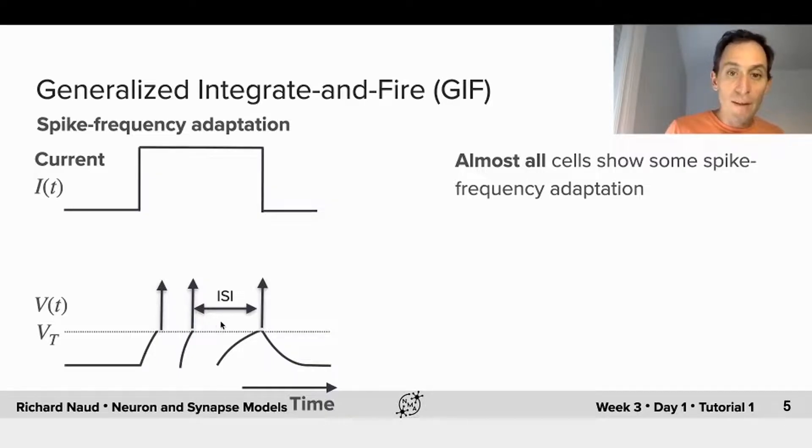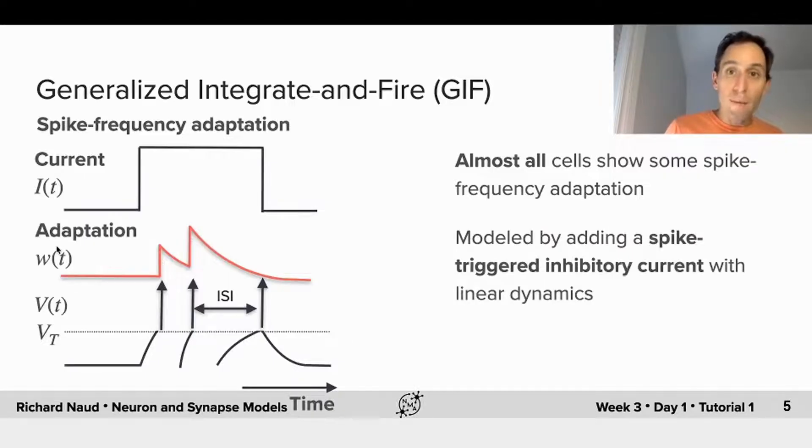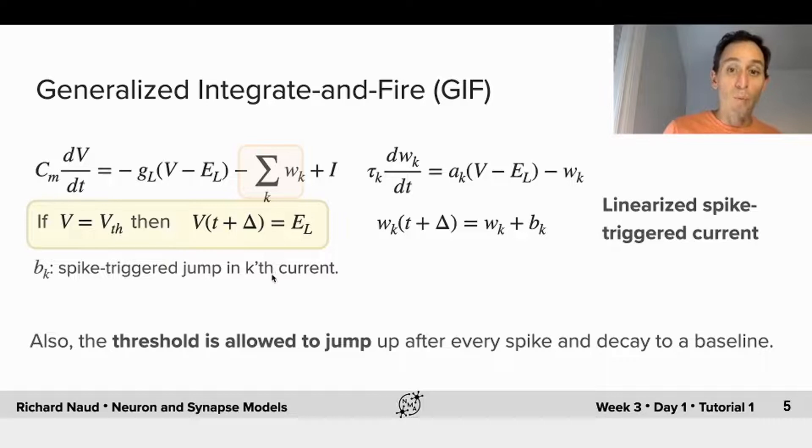So what we can do is have this adaptation current increasing, jumping up whenever there's a spike, and then to follow this linear dynamics. So we call that a spike-triggered current. And within the equations framework, we add this spike-triggered current to the threshold condition, such that whenever we reach a threshold and we say we're emitting a spike, not only do we reset the membrane potential to some potential, El, but we also make a jump by delta here, and then we follow the same dynamics.